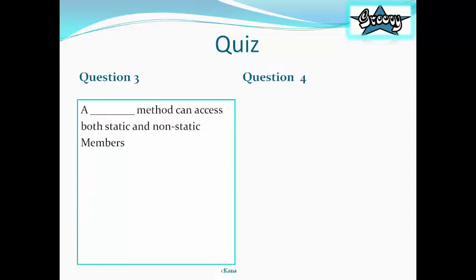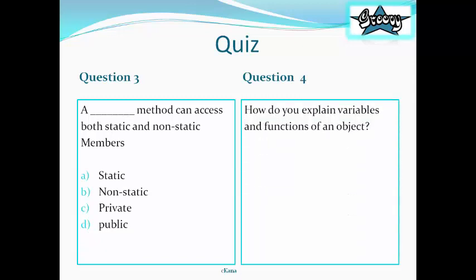Question 3. A dash method can access both static and non-static members. Static, Non-static, Private, Public. Question 4. How do you explain variables and functions of an object?